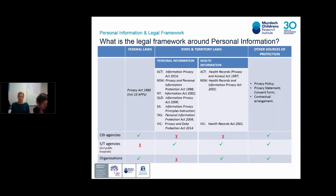At the state and territory level, we also have privacy legislation for the public sector, public hospitals, and universities. In three states — Victoria, New South Wales, and the ACT — we also have specific health privacy legislation which applies to the public and private sector in their relevant jurisdictions. In this presentation, we will only focus on the Federal Act and the APPs, firstly because MCRI, where we work, is subject to the Privacy Act, and also because the other regimes are not too different from the federal legislation.